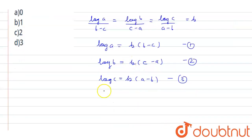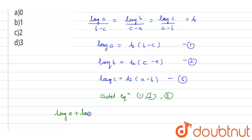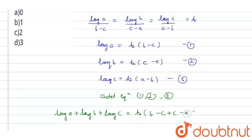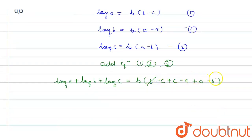Now add equations 1, 2 and 3. Then what we get: log A + log B + log C = K times (B−C + C−A + A−B). Now see here, B is cut by minus B, A is cut by minus A, C is cut by minus C. Then what we get? Here, 0.